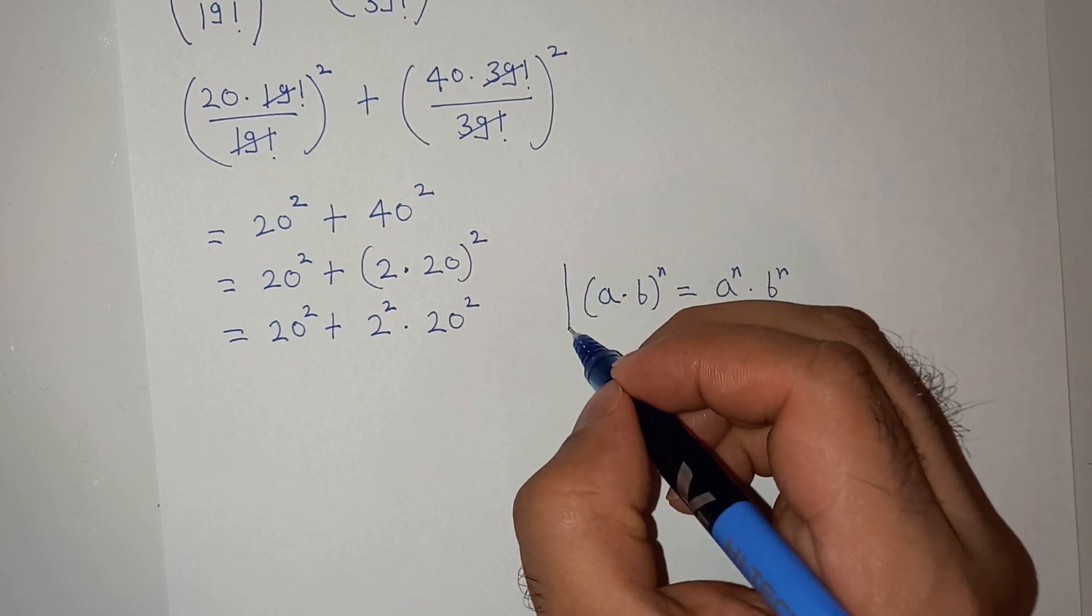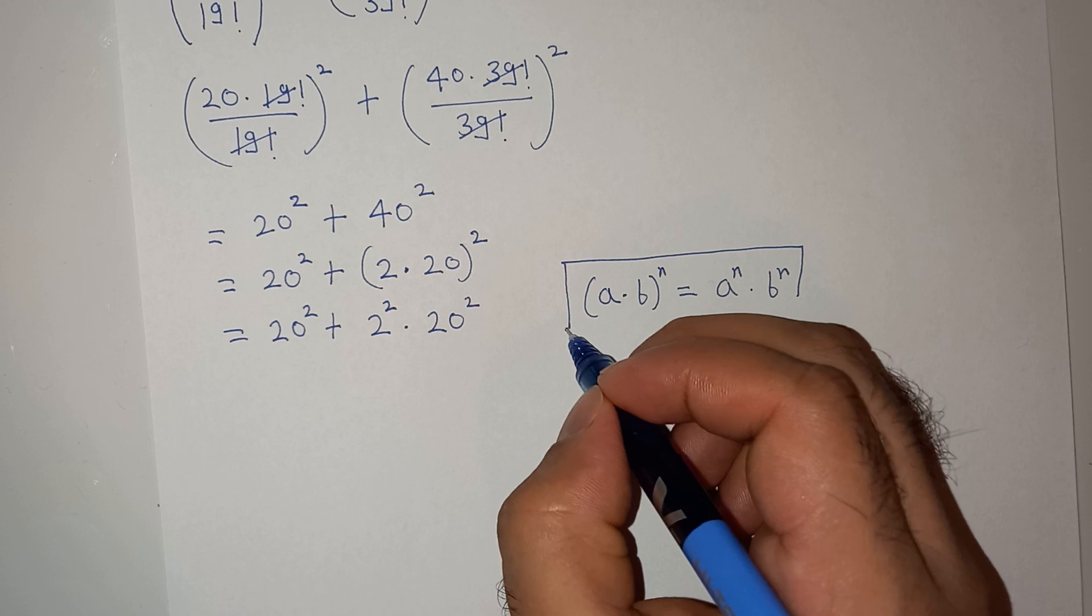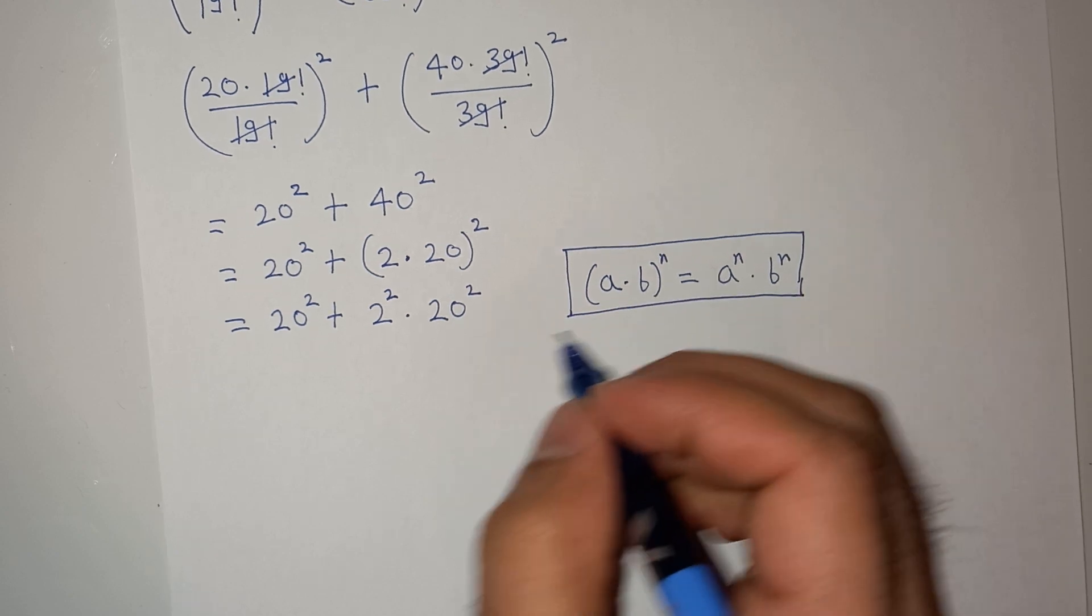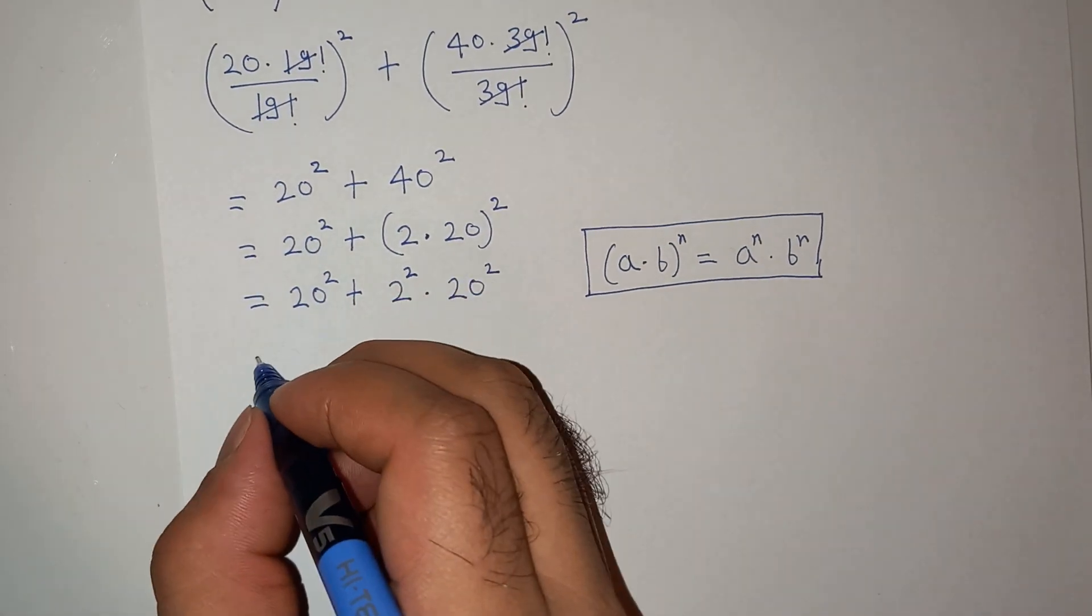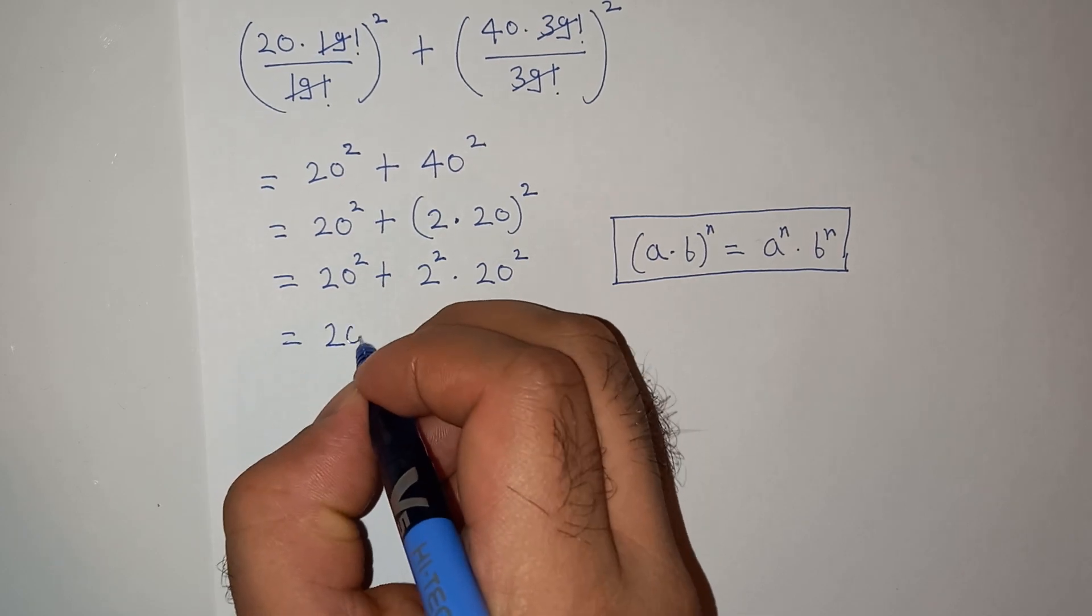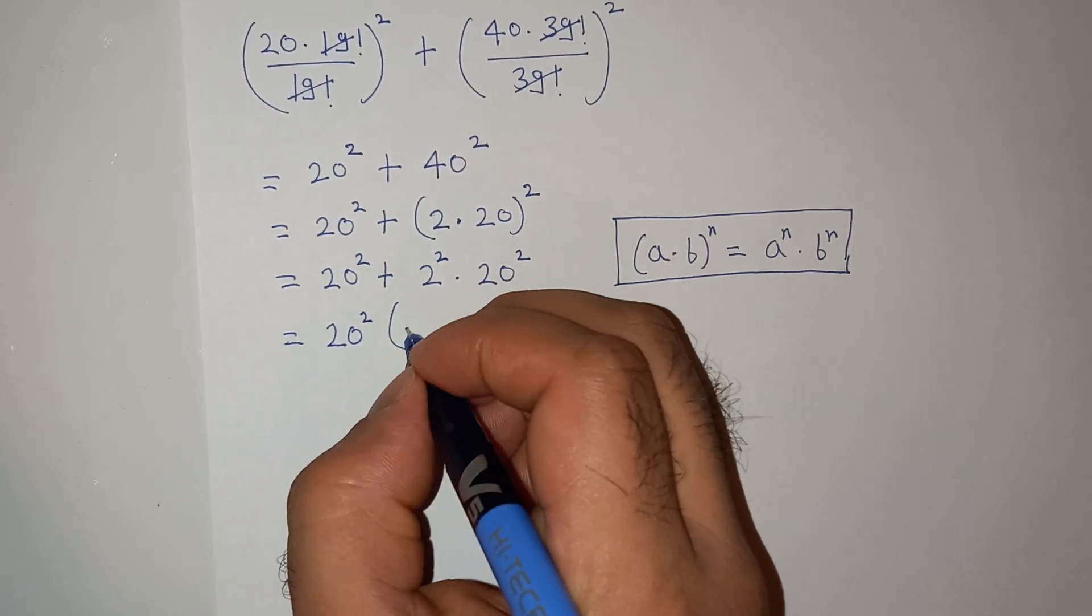Now this 20 square is common, so we can take it out, put the bracket: 1 plus 2 square.